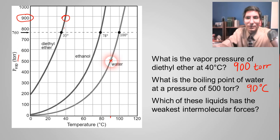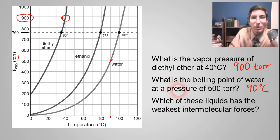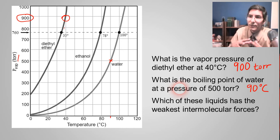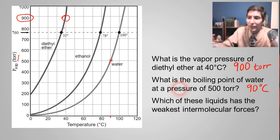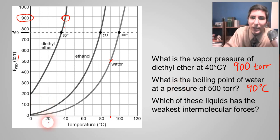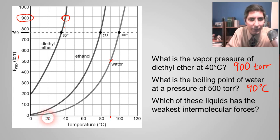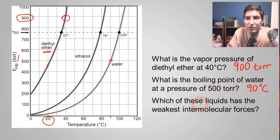Which of these liquids has the weakest intermolecular forces? Weaker intermolecular forces correspond to higher vapor pressures because the molecules don't stick together as well. Pick a temperature — say 20 degrees Celsius. The one with the highest vapor pressure has the weakest intermolecular forces. At 20 degrees, the one with the highest vapor pressure by far is diethyl ether. So diethyl ether has the weakest intermolecular forces, which means water would have the highest.